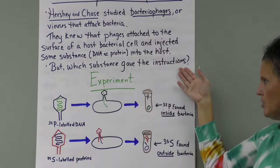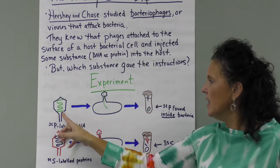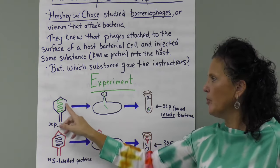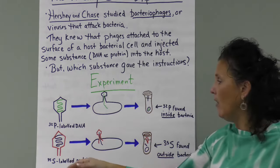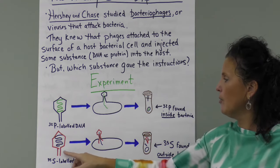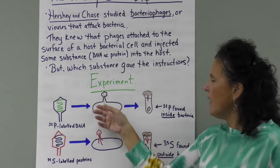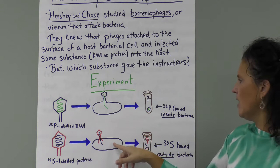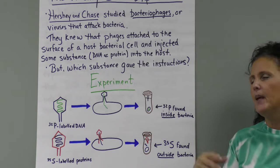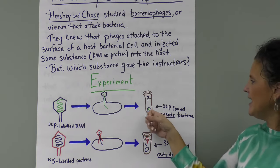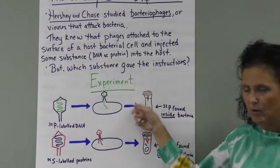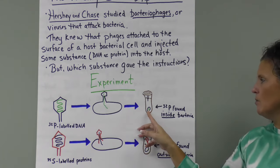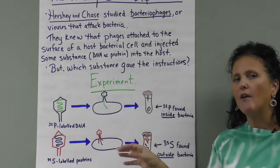They radioactively labeled the protein coats and the DNA. In one experiment, they used 32-phosphorus to label the DNA — that's the green material — and in another they used 35-sulfur to label the protein coat. They let the bacteriophages infect the bacterial cells, injecting their DNA into the host cells, then put everything in a centrifuge. In the 32-phosphorus experiment, the radioactive label was found inside the cells; in the 35-sulfur experiment, it was found on the outside of the cells.